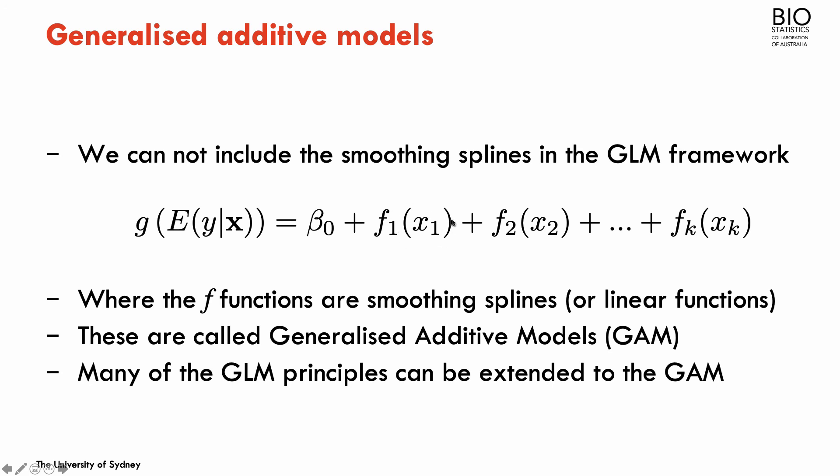Obviously this only makes sense in cases of continuous data or at least ordinal data. If x1 is a dichotomous variable, it doesn't really make sense to put a spline. But f can be the identity function but can also be a spline. So the entire framework of GLM can be extended to the use of splines, and this is what's usually called in the literature by generalized additive models.